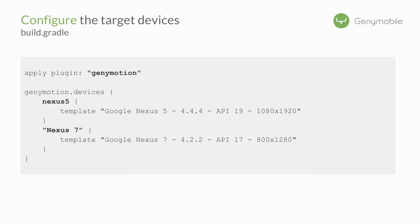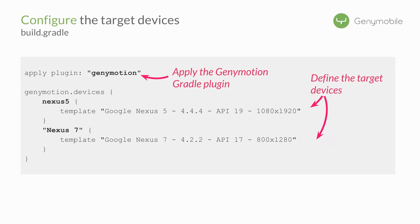Now it is time to configure the target devices you want to run your tests against. First things first, you need to apply the GeniMotion Gradle plugin, which is exactly what you do when you apply your Android Gradle plugin — so apply plugin: GeniMotion. Then you open a block, GeniMotion.devices, and you will define the devices you want to create. Here I defined a Nexus 5 with the template name Google Nexus 5.